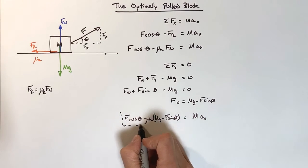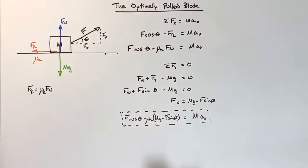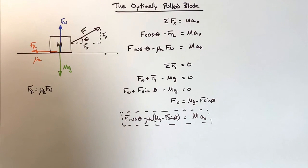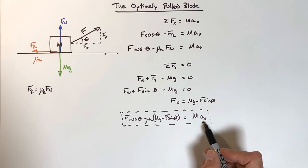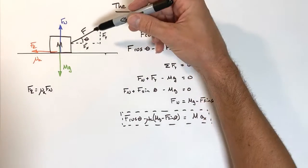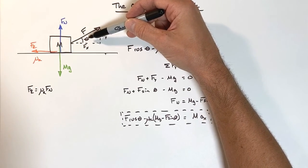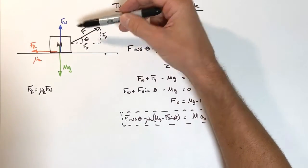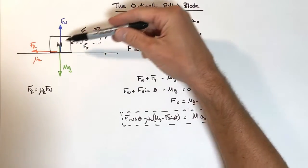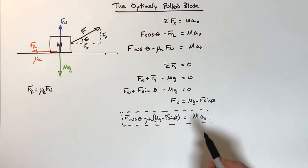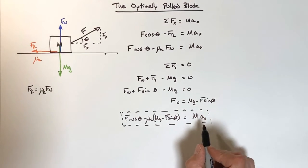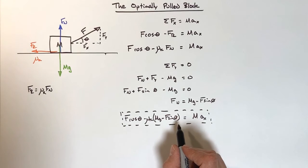This isn't the final answer yet, but it gets us in the right direction. What we need to do now is optimize or maximize this acceleration. The mass, pull force, and coefficient of kinetic friction are all given values. The only thing we can vary is theta, and as theta changes the acceleration changes. So we want to maximize acceleration as a function of theta.